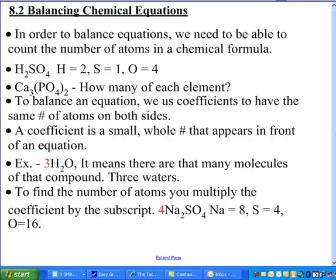The first thing we've got to do is make sure that we can count atoms. If I look at a molecule like this — this happens to be sulfuric acid — there are two H's, one S, and four O's. We don't write the one in there; it's understood, but there is a one right there.